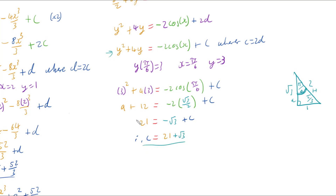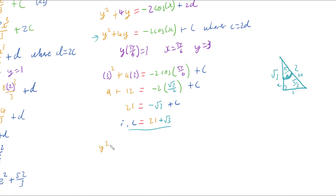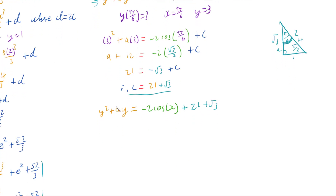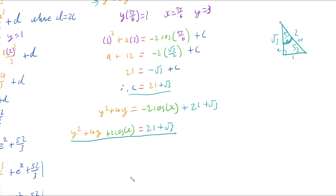Substituting c back into our equation, we have y squared plus 4y equals negative 2 cos x plus 21 plus root 3. There is no way to isolate y here to get y as an explicit function of x, so we write it instead as an implicit function: y squared plus 4y plus 2 cos x equals 21 plus root 3. That's the best we can manage, so we are now done.